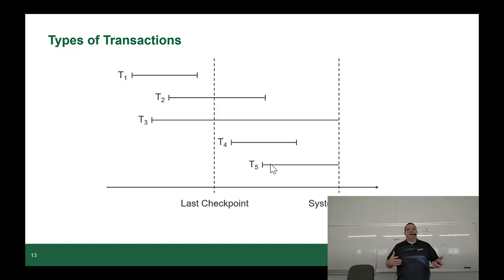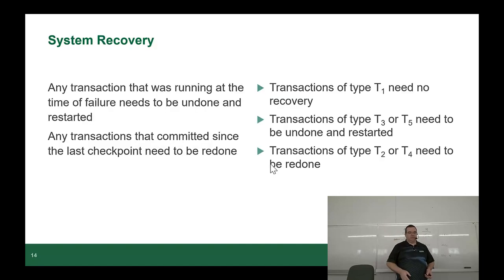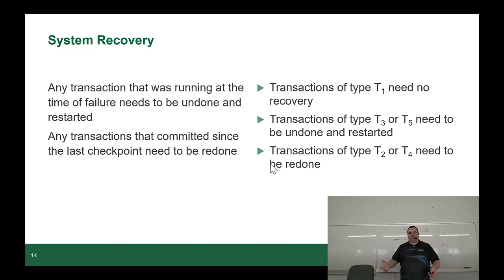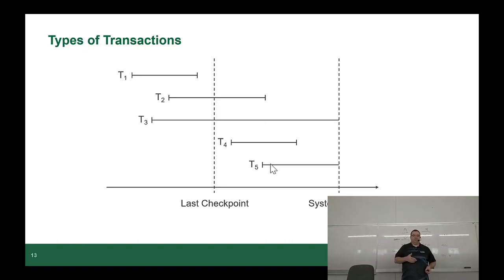There's a graph showing the different states a transaction can be in. Any transactions running at the time of failure need to be undone and restarted; any transactions that were committed since the last checkpoint just need to be redone. Type 1 doesn't need recovery. Types 2 and 4 need to be redone. Types 3 and 5 need to be undone and refired.